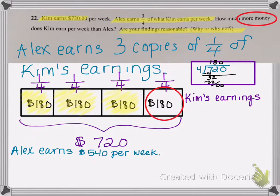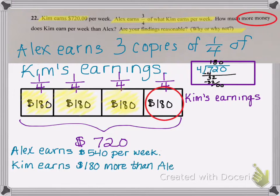If I want to know how much more money Kim earns, then I would subtract $720 minus $540. That would also give me the excess of $180. So we can say Kim earns $180 more than Alex per week.